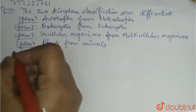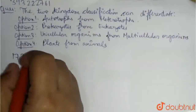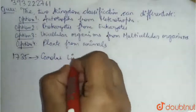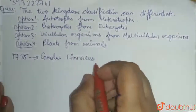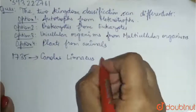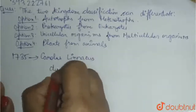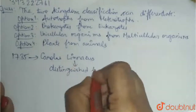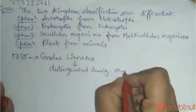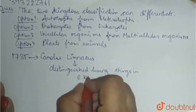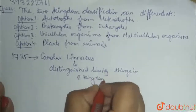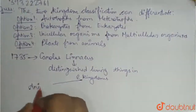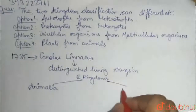In 1735, scientist Carolus Linnaeus classified all living things into two kingdoms. The first kingdom was Animalia and the second kingdom was Plantae.